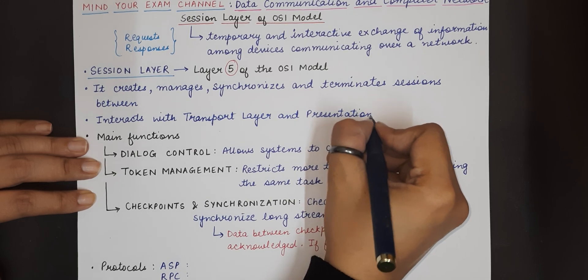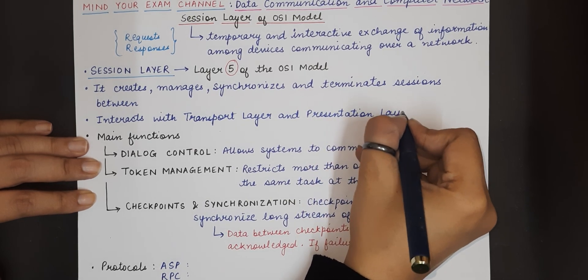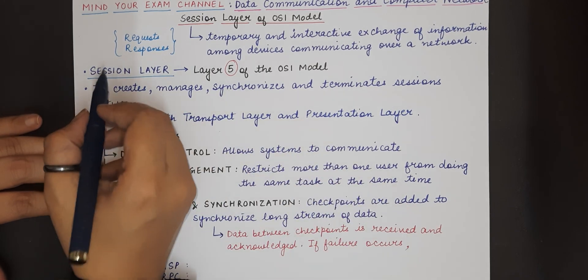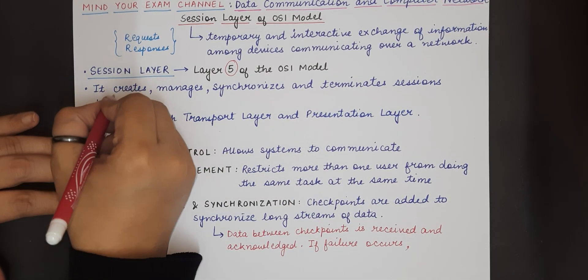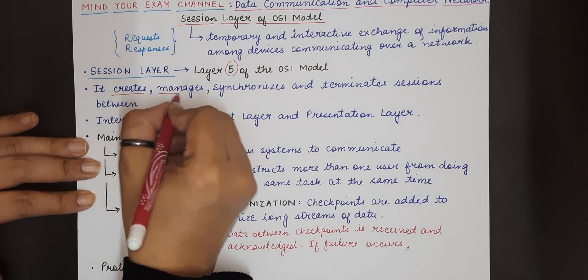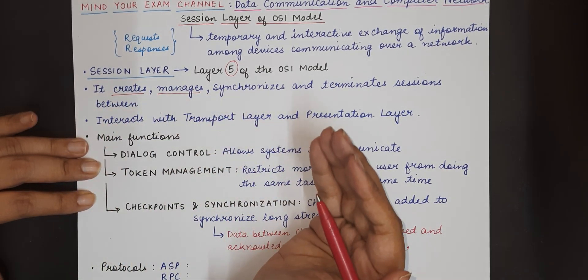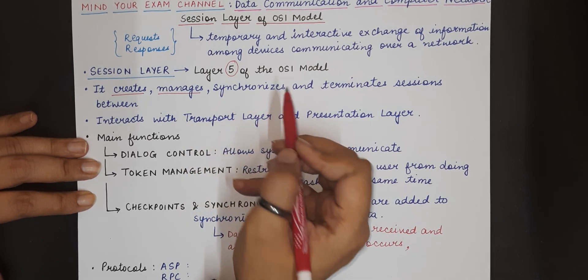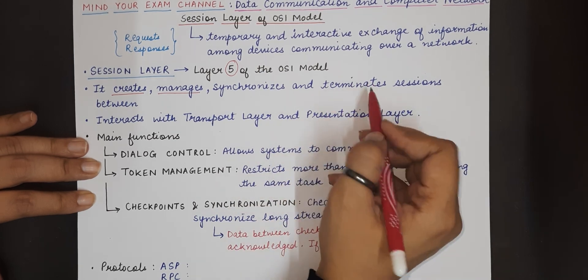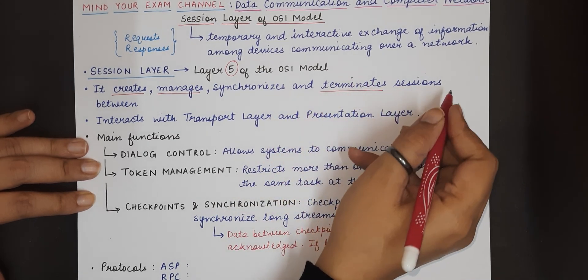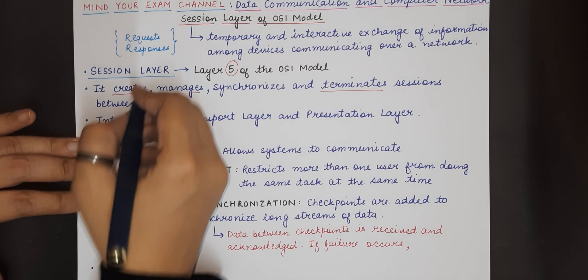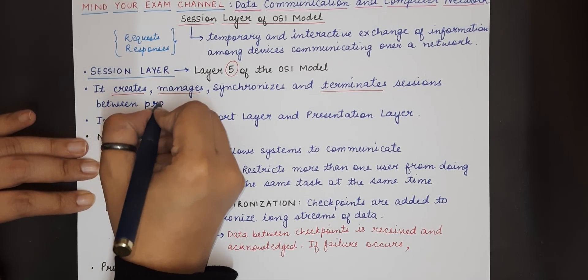Transport layer and presentation layer interact with the session layer in the OSI reference model. Now the responsibility of the session layer is to create, that means to start a session, to manage the session that has been started, then perform synchronization among the data that is being exchanged, and finally terminate or end the sessions that have been started between the processes of end user applications.